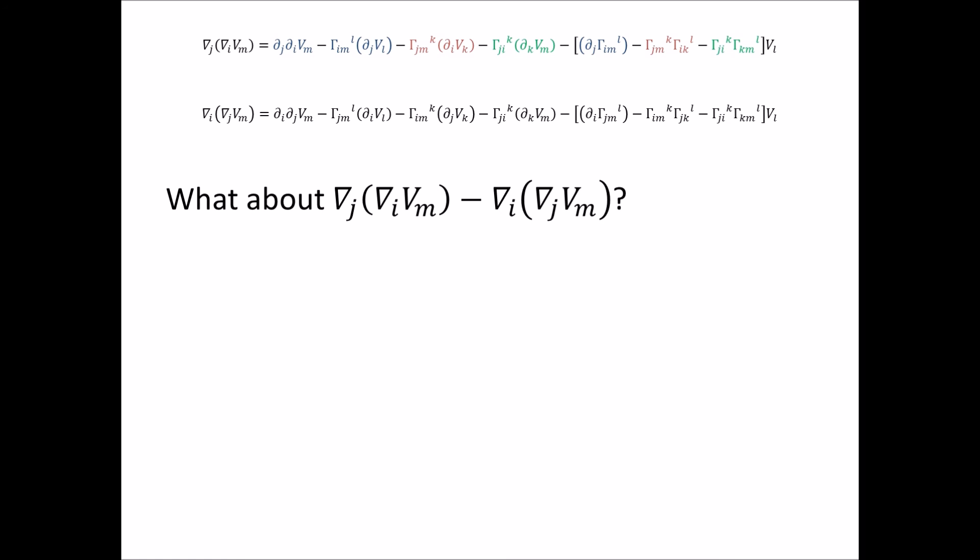You actually get a very nice simplification, which is this. The only thing that's left are those VL terms that we separated out before. Everything else cancels out. And you can do that as an exercise. Just add those on paper. It's a pretty quick two minute thing. And you'll see that the only things that are left are these VL terms, leaving them factored out.